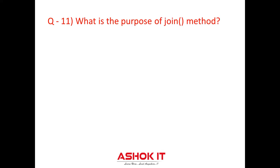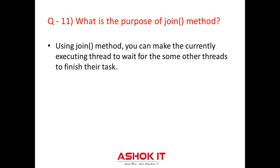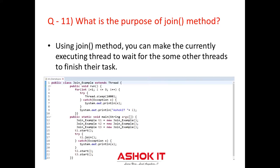Question eleven: What is the purpose of the join method? Join is a final method of Thread class and it can be used to join the start of a thread's execution to the end of another thread's execution, so that a thread will not start running until another thread has ended. If the join method is called on a thread instance, the currently running thread will block until the thread instance has finished executing.